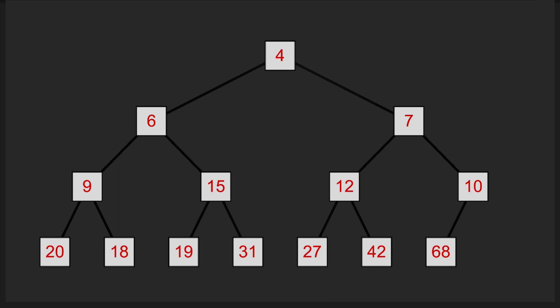If we want to add a new node to the heap with an F cost of 5, it's clearly not in the correct position since it's lower than its parent. All we have to do is check if it's lower than its parent, and if it is, swap it. We keep comparing and swapping upward. In this case we've only had to compare it against 3 nodes out of the other 14 to find its correct position.